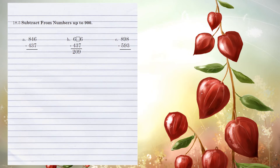Unit 18.5: Subtract from numbers up to 900. Let's look at Example A. We start in the 1's column — you cannot subtract 7 from 6. So we're going to borrow from the 4 in the 10's column and make it a 3. That in turn makes the 6 a 16. 16 minus 7 is 9. In the 10's column, 3 minus 3 is 0. And in the 100's column, 8 minus 4 is 4, for an answer of 409.